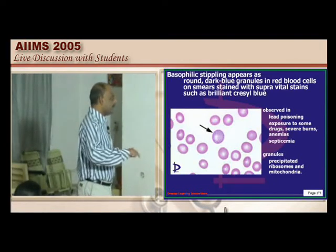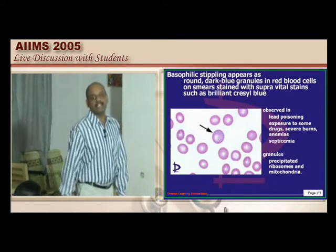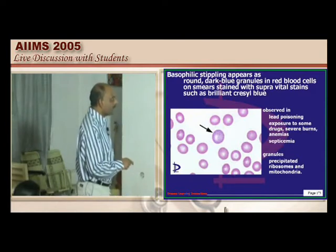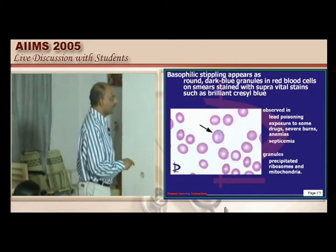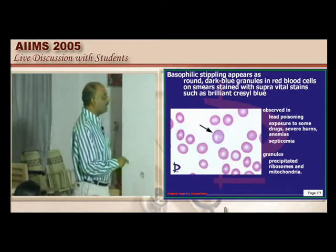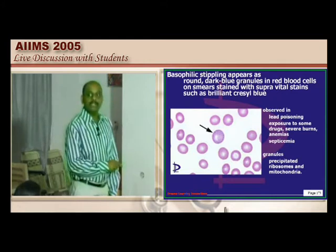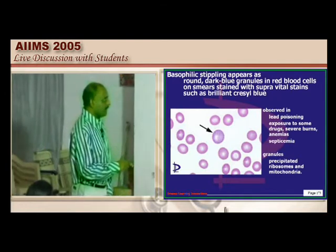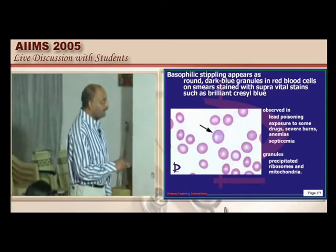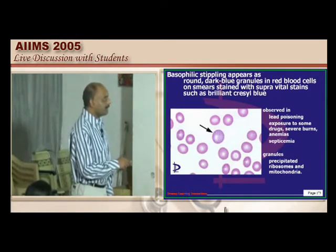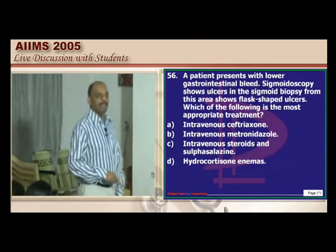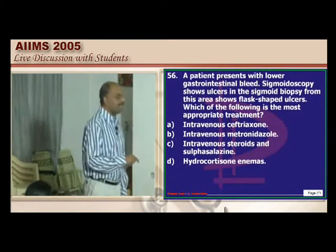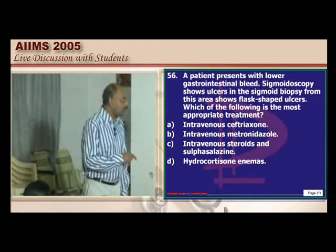Abdominal pain and basophilic stippling — closing your eyes, you can answer this as lead poisoning. Basophilic stipples are typical round dark blue granules found only by supra-vital staining, seen typically in lead poisoning, anemias, and septicemias. These stipples basically contain ribosomes and mitochondria, which need to be remembered.